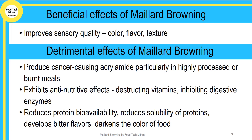Next we will see the beneficial and detrimental effects — the advantages and disadvantages — of the Maillard reaction. The advantages include improved sensory quality: the color change makes the product more appealing, for example transforming uncooked meat into roasted meat. It also gives a very pleasant aroma, making the product appetizing, and improves the texture of the product.